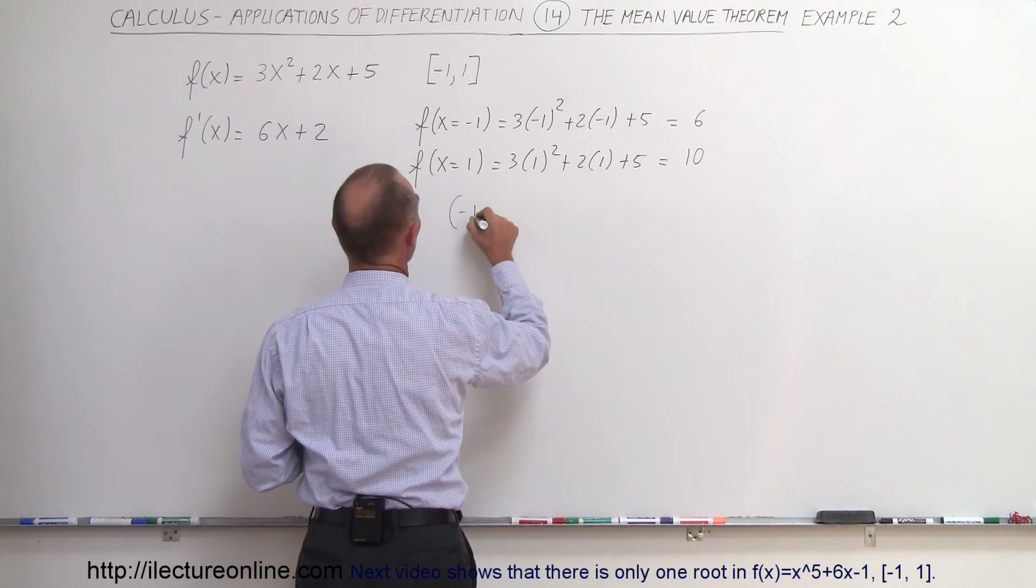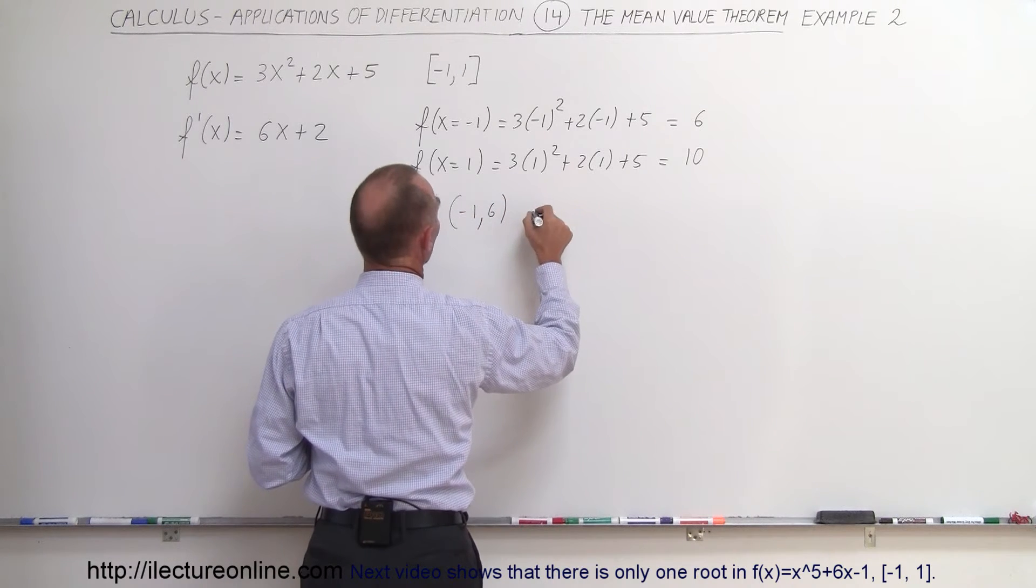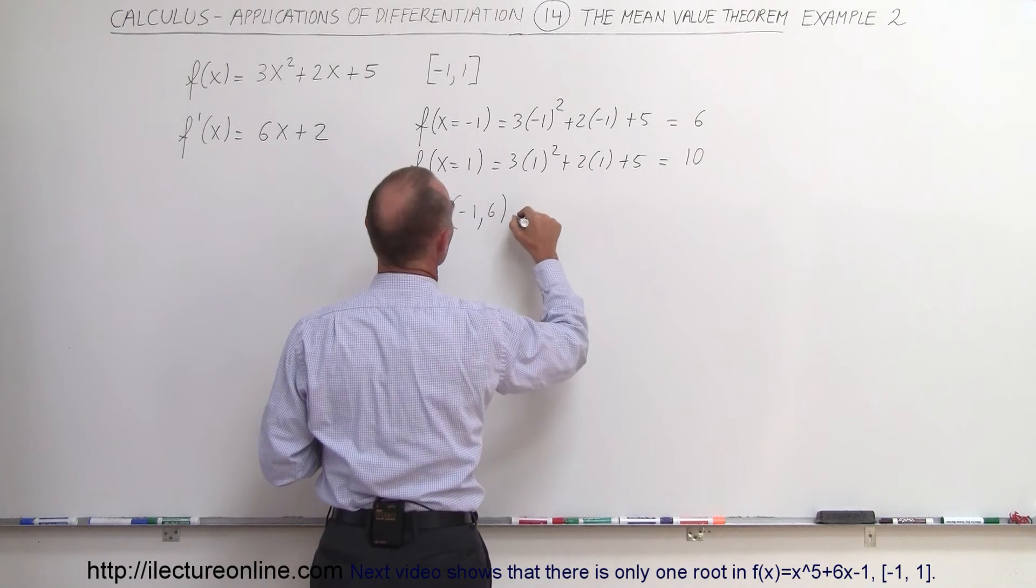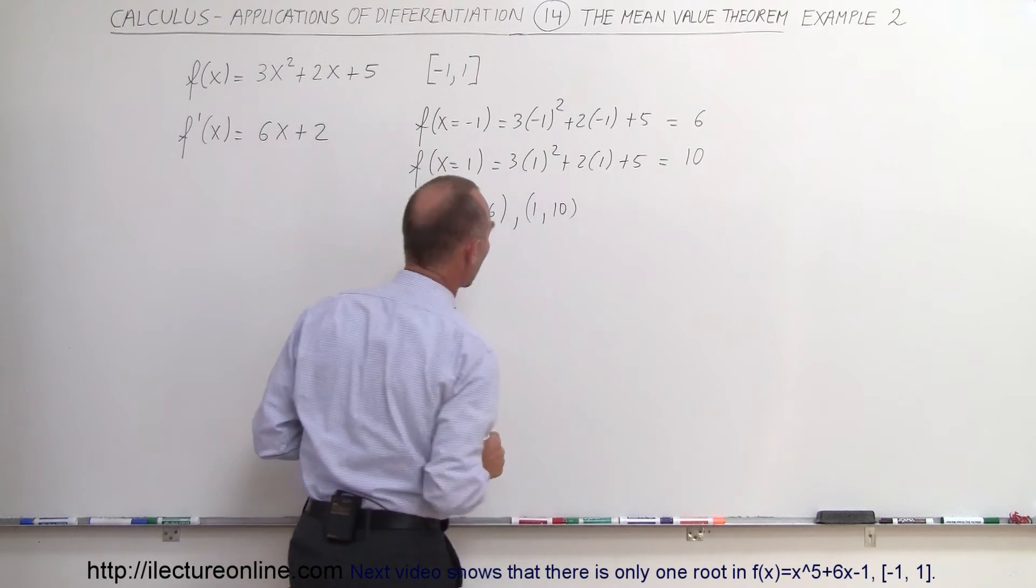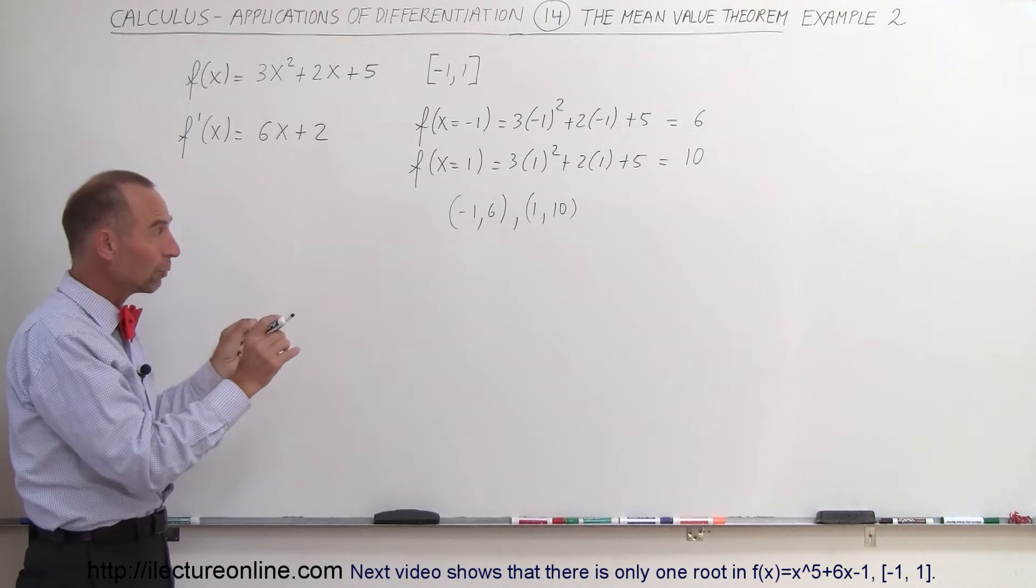We have the point negative 1 and 6, and the point 1 and 10. Alright, so those are the two points we know they're on the graph.